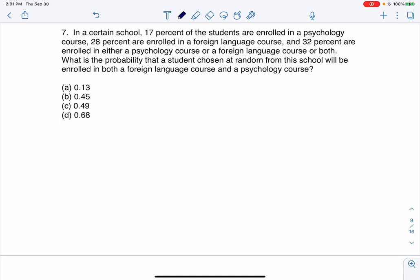Hey everyone, let's take a look at number seven. We have in a certain school, 17% of students are enrolled in a psychology course, 28% in foreign language, and 32% are enrolled in either or.